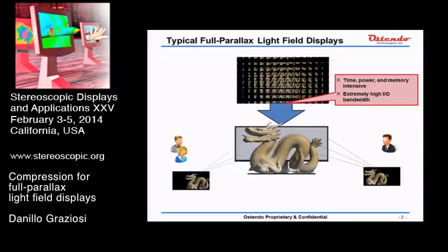For the deployment of full parallax light field displays, we have two challenges that we're faced with. The first one is actually the generation of content. Because full parallax light field displays utilize several more views than common stereoscopic displays, we actually have to spend a lot of time, power, and memory to generate that content. And then the second challenge is the extremely high bandwidth requirements to send this huge amount of data to the display.